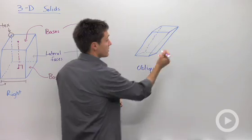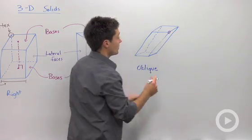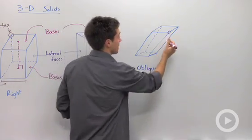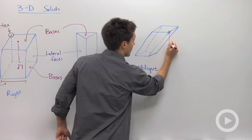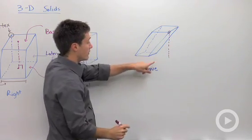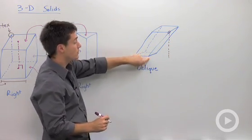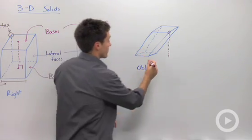So if I picked this front, top right corner, and if I dropped an altitude from here, it should have fallen right on this front right lower corner. However, it didn't.